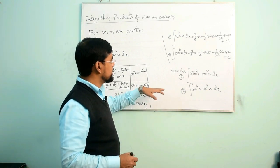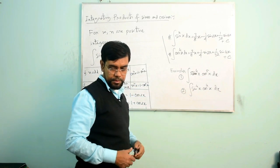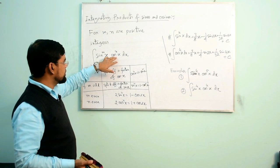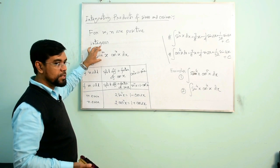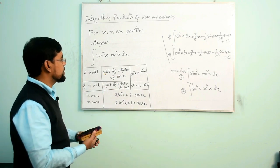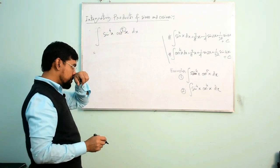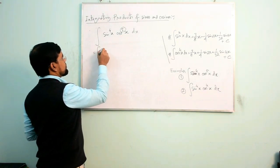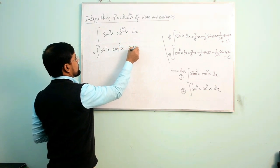Let us try Example 1: integrate sin⁴x cos⁵x dx. Here cos is to the power 5, and 5 is an odd number. Therefore, you need to take out one factor of cos x. So we write it as sin⁴x · cos⁴x · cos x dx.